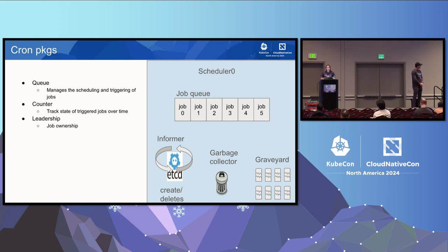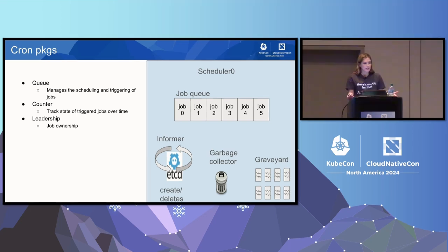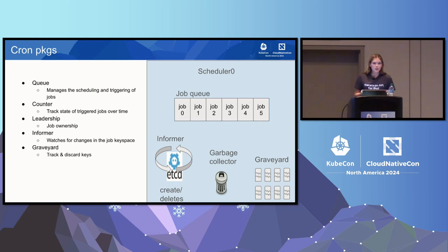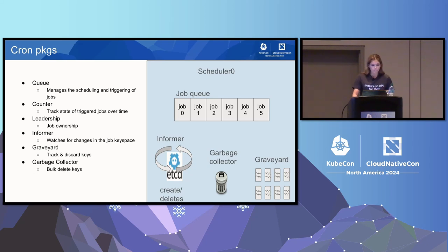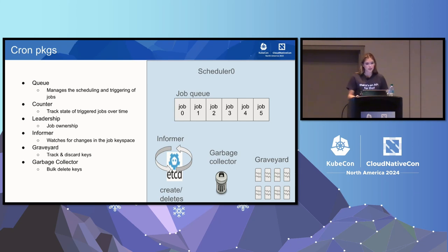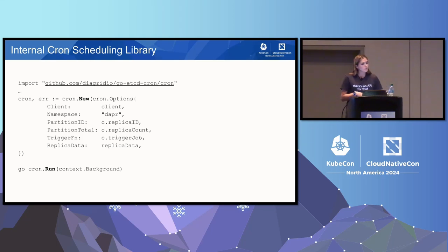The cron library includes various packages: a job queue, which is an in-memory queue used to manage the scheduling and triggering of jobs; a counter that tracks state over time — if you have 10 repeats or 2 repeats we keep track with a counter; a leadership package, which is job ownership where every scheduler is a peer — there is no leader, no follower, they are all equal. Each scheduler is a leader for its own partition of jobs and is responsible to trigger those back. This is dynamically recalculated so we never have a loss of jobs. If a scheduler goes down, we reshuffle the jobs amongst the available schedulers.